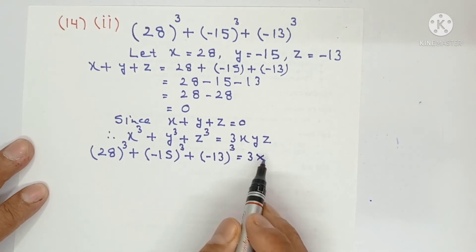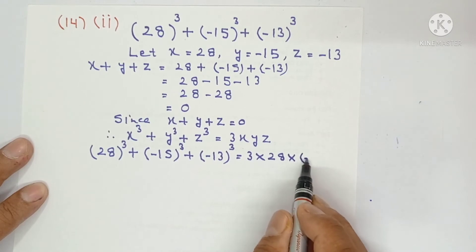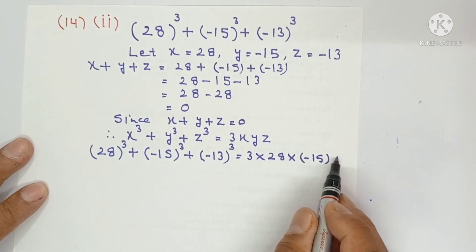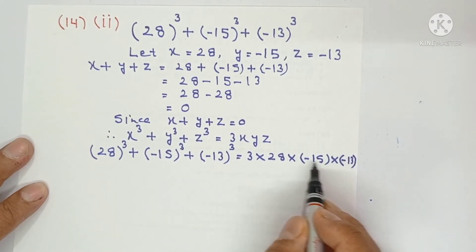And it is equal to 3 into x, where x is 28, y is minus 15, and z is minus 13. So minus and minus become plus.